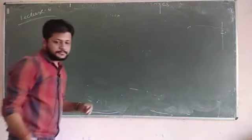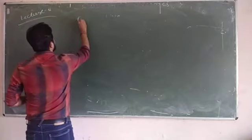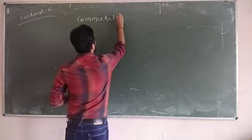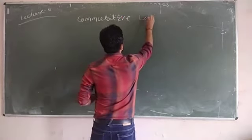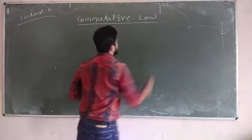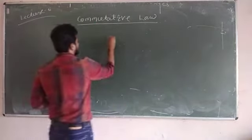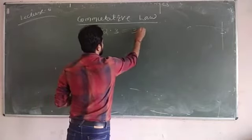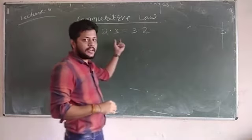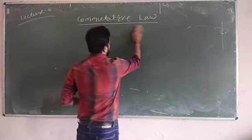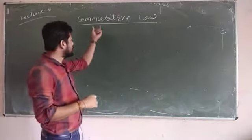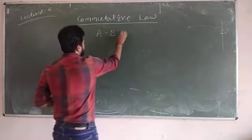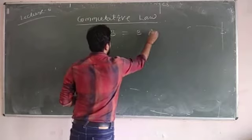The next law is the commutative law. You have studied this from mathematics — the result of 2 × 3 is always equal to 3 × 2, meaning it is position independent. Similarly, in Boolean algebra, the OR gate and AND gate obey the commutative law: A AND B is always equal to B AND A.